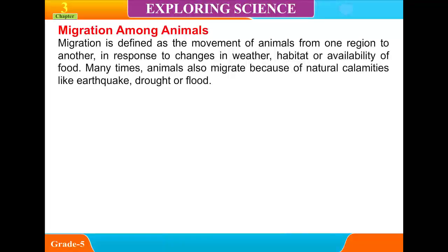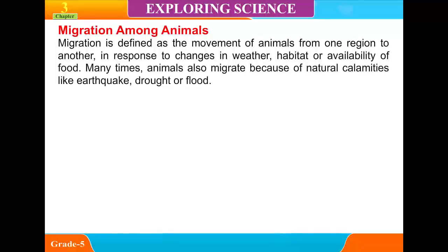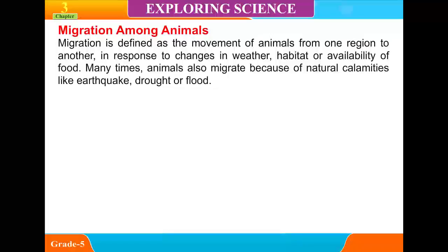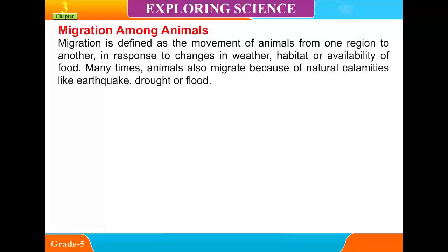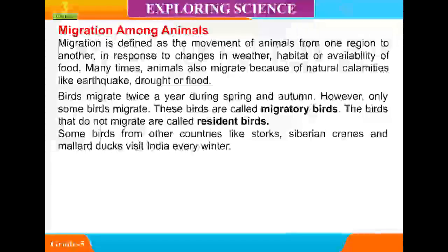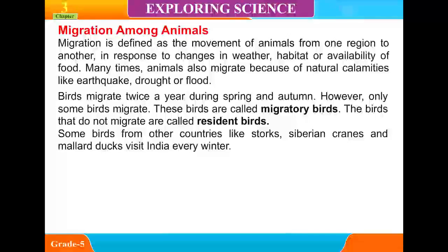Migration Among Animals: Migration is defined as the movement of animals from one region to another. It may be caused by changes in weather, habitat, or availability of food. Many times animals also migrate because of natural calamities like earthquakes, drought, or flood. Birds migrate twice a year, during spring and autumn; however, only some birds migrate. These are called migratory birds, while those that do not migrate are called resident birds. Some birds like Siberian cranes and mallard ducks visit India seasonally.